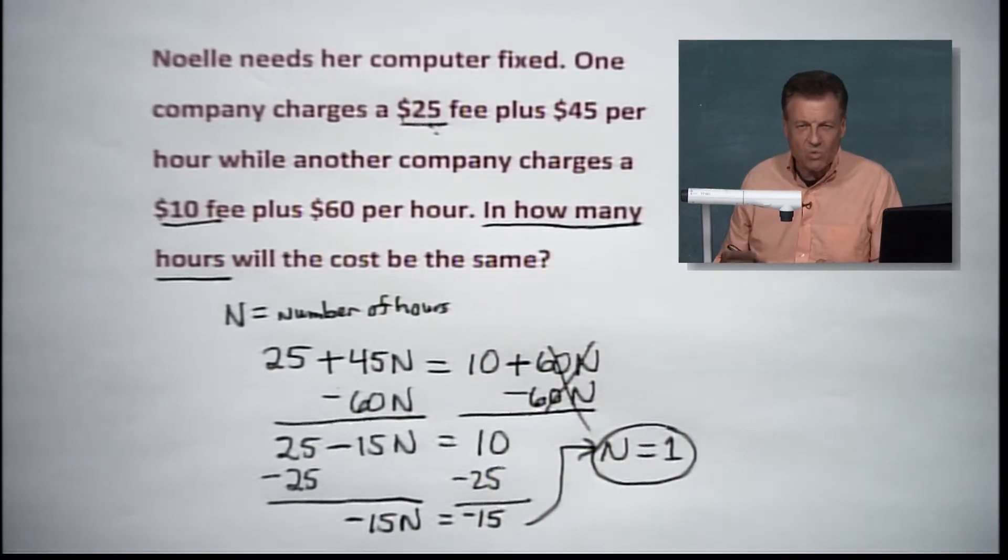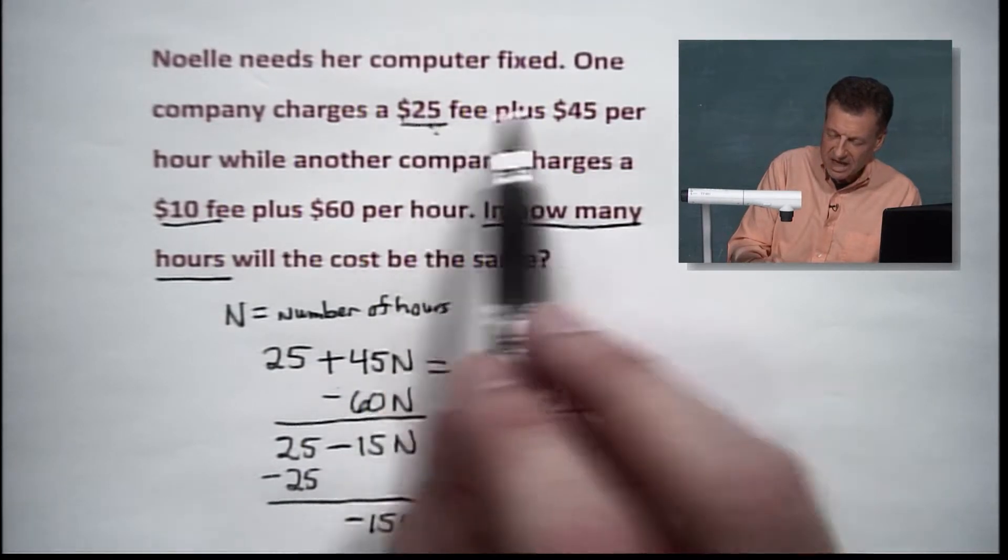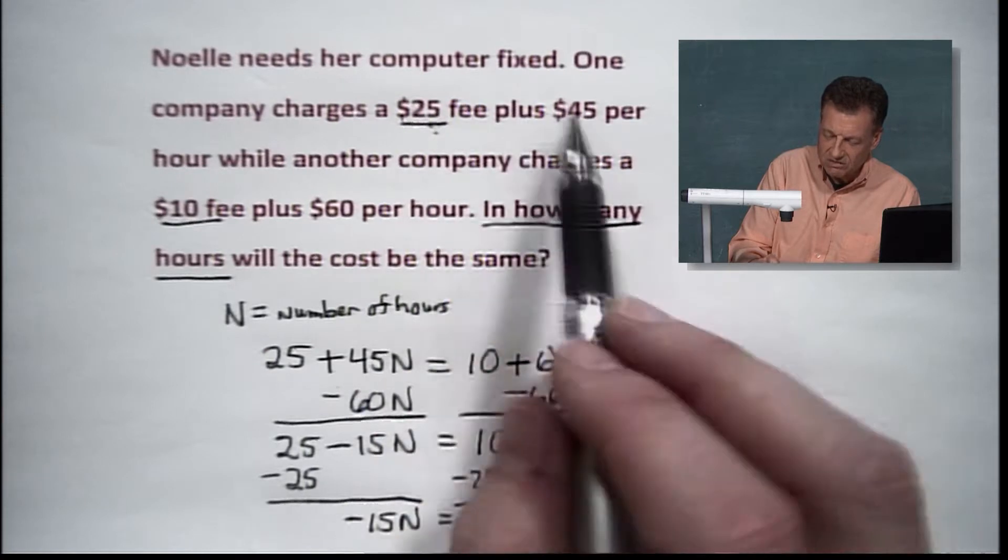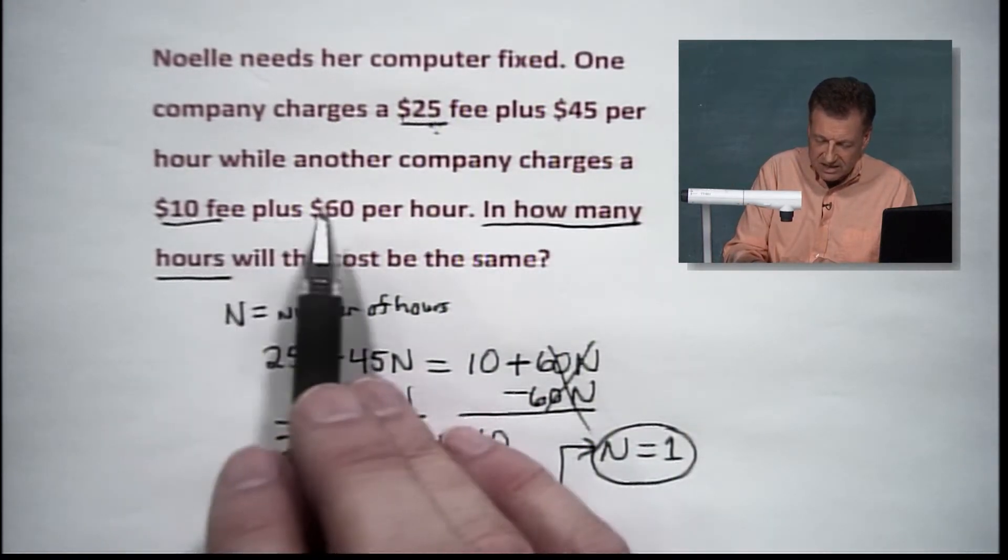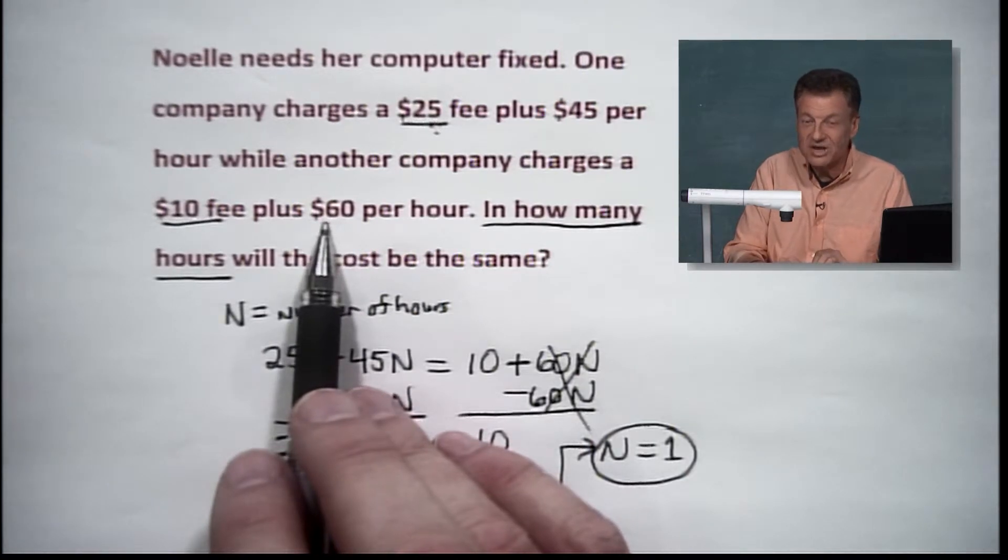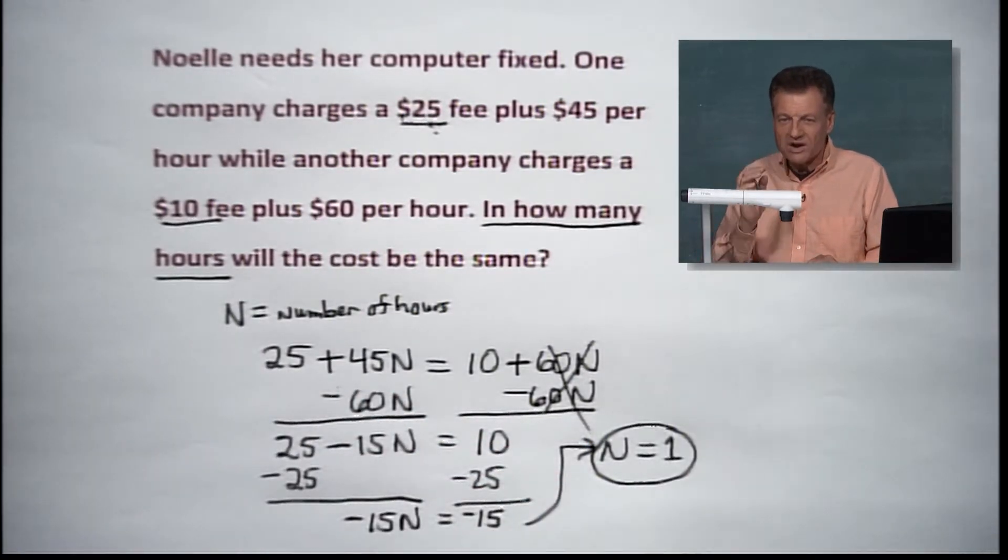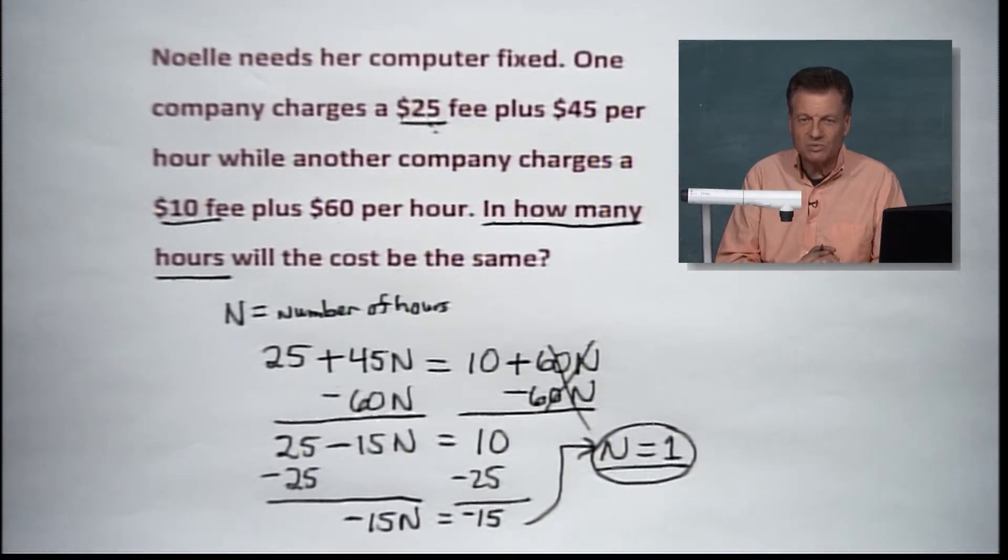You think so? Well, 1 hour? Let's check and see. You had 25, and you're going to work 1 hour. That's going to be 45. So that's going to give you $70. Here, you've got 10. My goodness, plus 60. You get 70 also, don't you? So what is the magic moment where things become equal between your two companies?